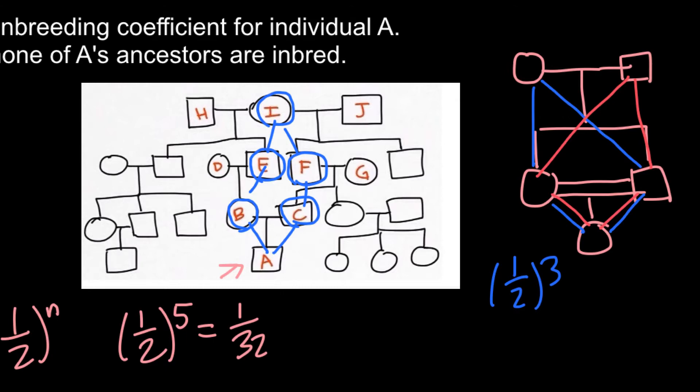And we have also one, two, three nodes in the second loop. So plus one-half in the power of three.